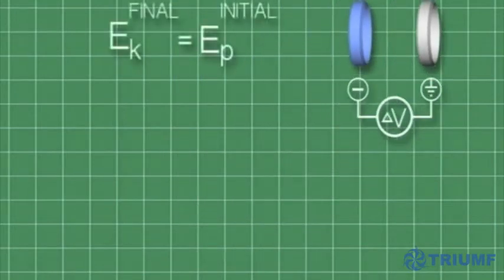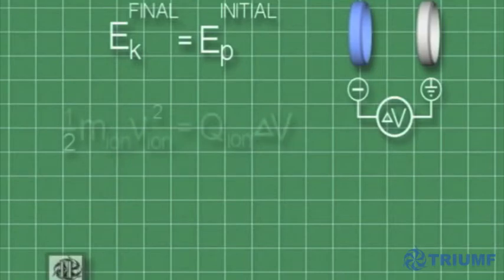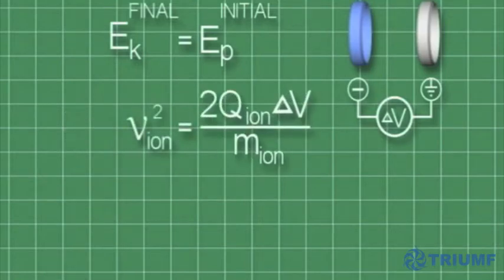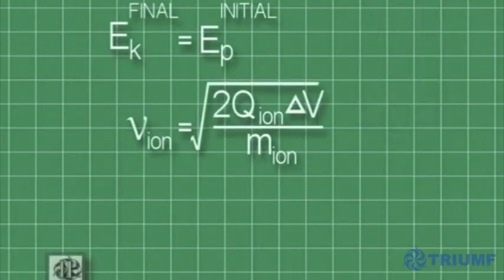Let's equate the initial potential energy with the final kinetic energy. By rearranging the formulas, we see that the velocity of the ions depends on their mass and the electrical potential difference.